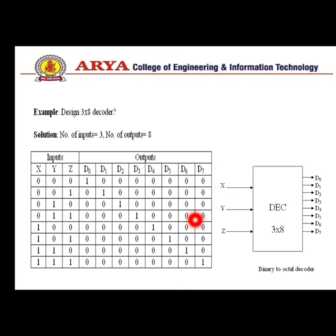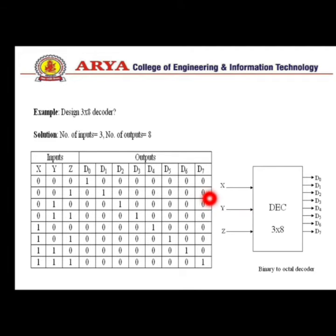The final output D7 equals X·Y·Z. This is the general block diagram of a binary-to-octal decoder — it is also known as binary-to-octal because in binary we have three values and in octal we have eight values. So with three inputs and eight outputs, this decoder performs binary-to-octal conversion.